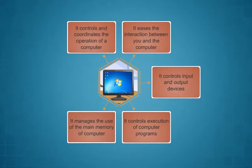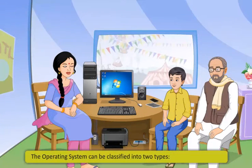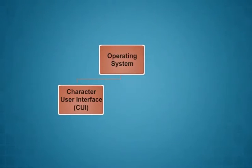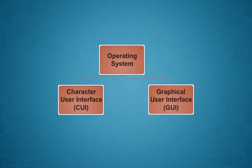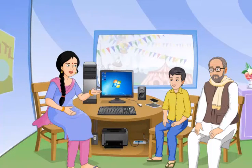It manages the use of the main memory of the computer, and it helps you to manage and manipulate files. The operating system can be classified into two types: character user interface and graphical user interface. Let us discuss them one by one.